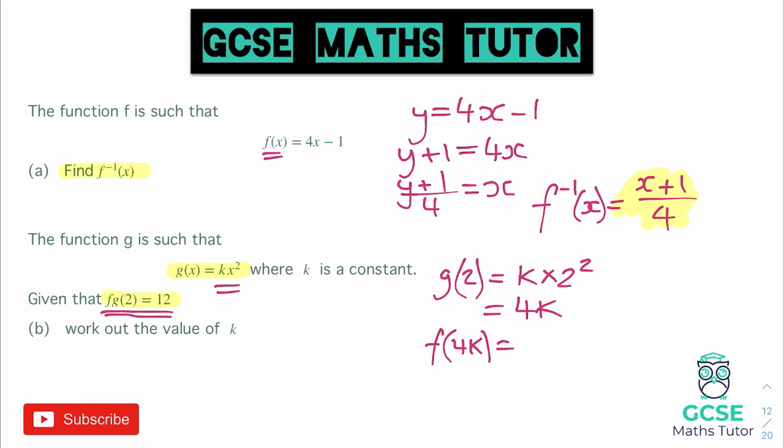So for the f function we'll put 4k in, and when we substitute 4k in what do we get? And remembering that the f function is up here 4x - 1. So that would be 4 lots of 4k and then minus 1. So if we expand that bracket 4 times 4k would be 16k. So our final answer there is 16k - 1.